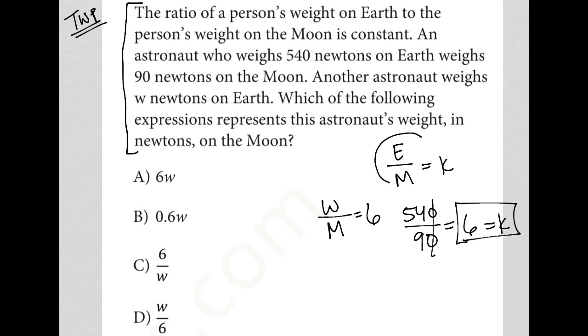So I used this information to then place these numbers in the proper location, which then told me that I get six for my K value, which then allows me to place this six here in the actual question. This is the actual question that I'm trying to solve. So as you can see, all of my answer choices have W, which makes sense because I'm looking for the astronaut's weight in newtons on the moon, so I just want M equals.